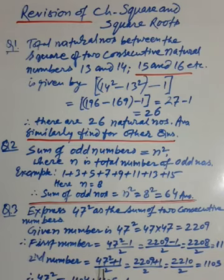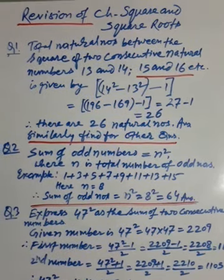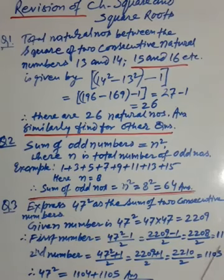Similarly, the second number is (n² + 1) / 2 = (2209 + 1) / 2 = 2210 / 2 = 1105. So 47² can be written as 1104 + 1105. This is the answer.